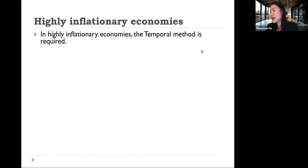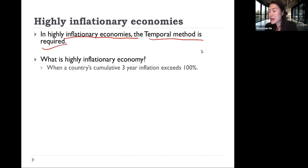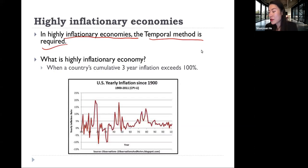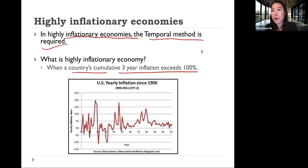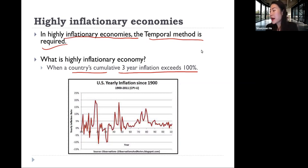As a side note, if it is a highly inflationary economy, the rule is that the temporal method must be used. A highly inflationary economy is generally defined as one where the country's cumulative three-year inflation exceeds 100 percent. For most countries and most of the time this isn't an issue, but for certain countries during certain periods it does apply, and if one of the foreign subsidiaries is in that situation, we need to use the temporal method regardless.